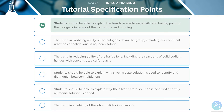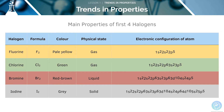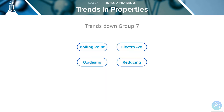First, we will look at the trends in halogens. You should know and learn the main properties of the first four halogens. The ones we'll be looking at are fluorine, chlorine, bromine, and iodine. Let's look at their trends in boiling point, electronegativity, and the oxidizing and reducing powers of these elements.